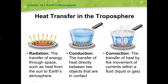Let's take a look at heat transfer in the troposphere. Energy from the sun heats the atmosphere, drives air movement in the troposphere, and influences weather and climate. Heat always moves from a warmer substance to something that is cooler. Heat is transferred in three ways: radiation, conduction, and convection, which you can see in the images on your slide.